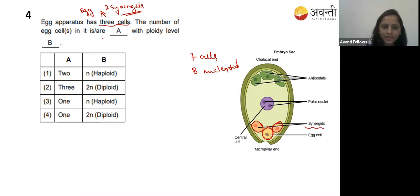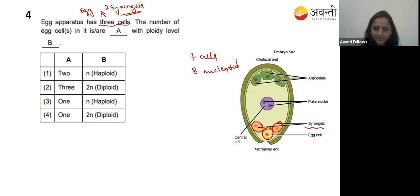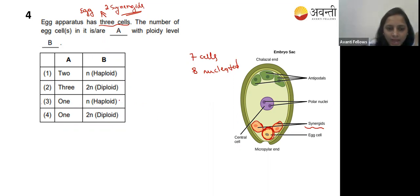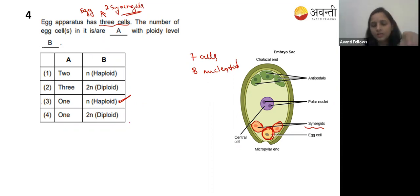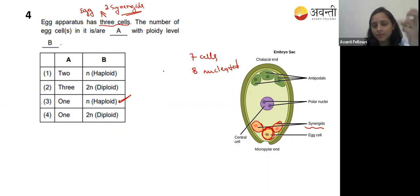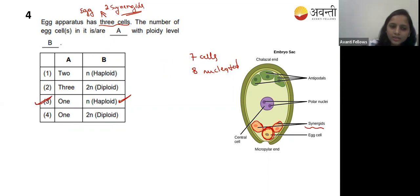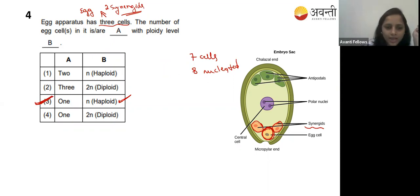The number of egg cells in the egg apparatus is one. That one egg cell is haploid in nature, not diploid. When the sperm comes and fertilization happens - syngamy - it fuses to form 2N, which is the zygote. So the correct answer is option three: the egg apparatus has one egg cell and it is haploid.